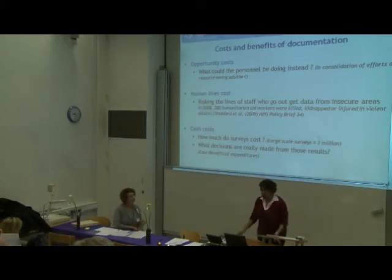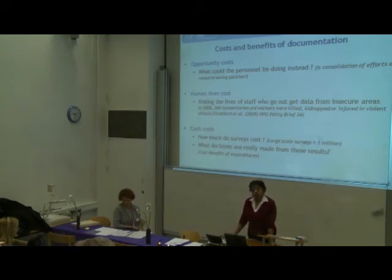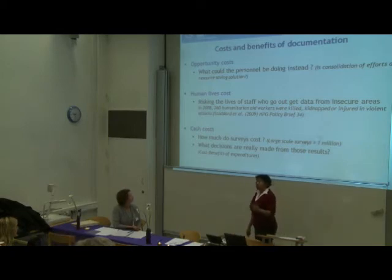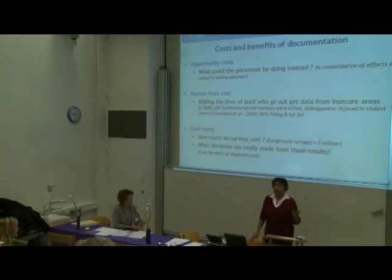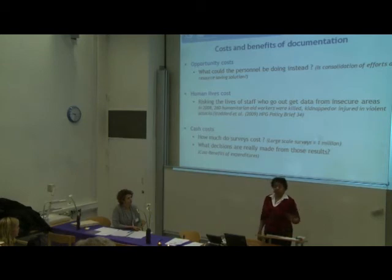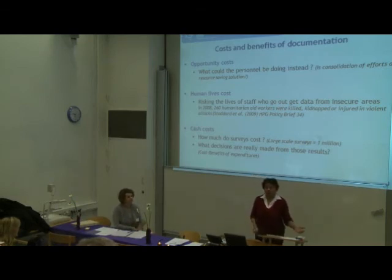Second, human lives costs: risking the lives of staff who work to get data from insecure areas. In 2008, 268 humanitarian aid workers were killed, kidnapped, and injured in violent attacks — this is not an insignificant consideration. Third, cash costs: surveys of this kind seem to cost on the order of a million dollars at minimum. With a shrinking UN budget, you have to think about whether to spend a million dollars on a survey whose results take a year to arrive, or whether to buy soap for the people.